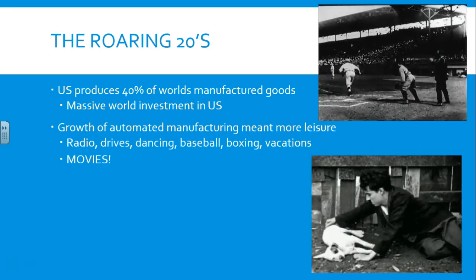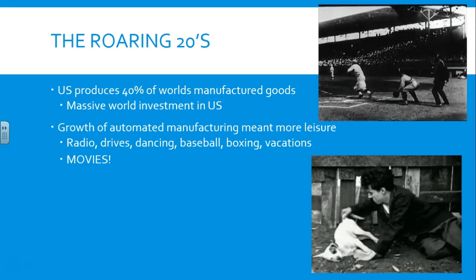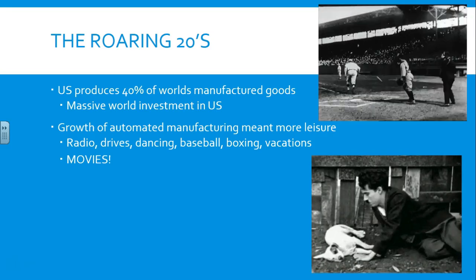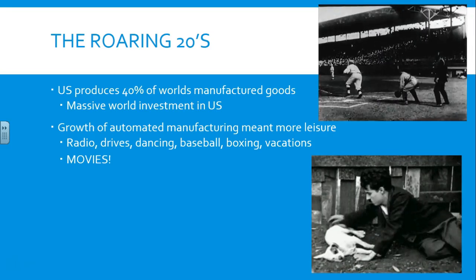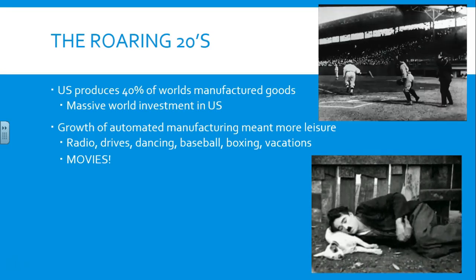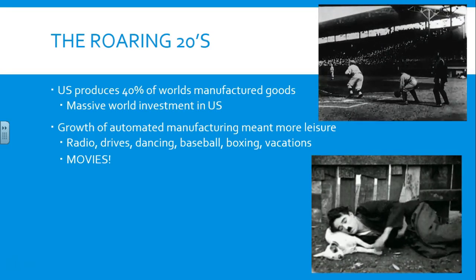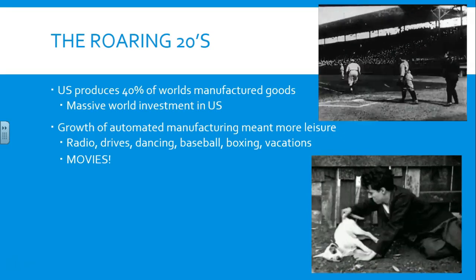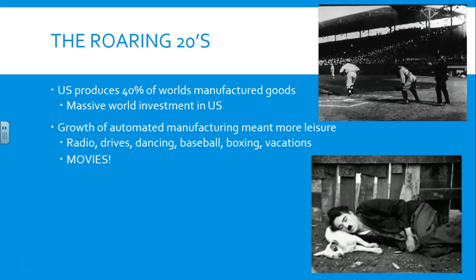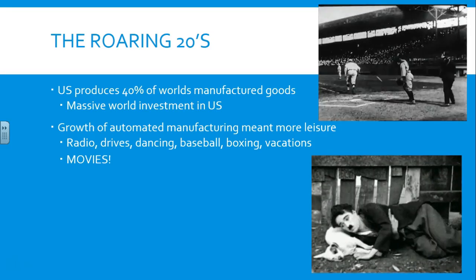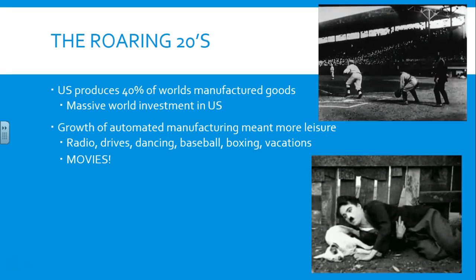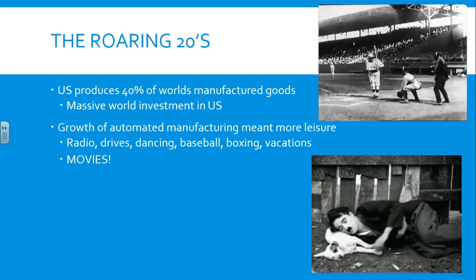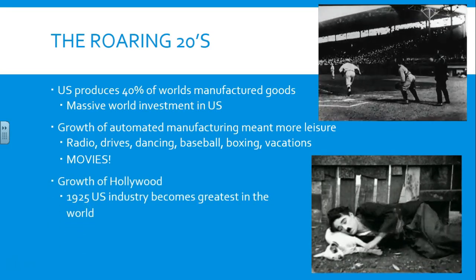Additionally, there's going to be growth of automated manufacturing, which means more time for leisure. For example, you don't have to spend your entire day washing clothes — you can put it in the washing machine and let it do it for you. So people are enjoying things like the radio, going on drives because more people have automobiles, going out dancing to jazz, a new style of music, going to baseball games with people like Babe Ruth, or going on vacations somewhere new.